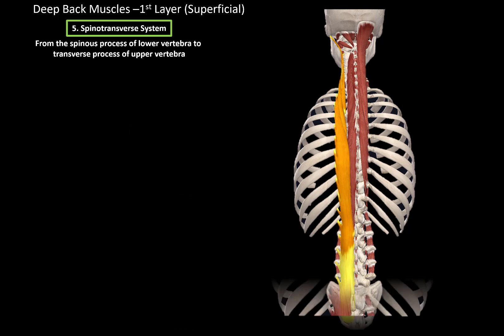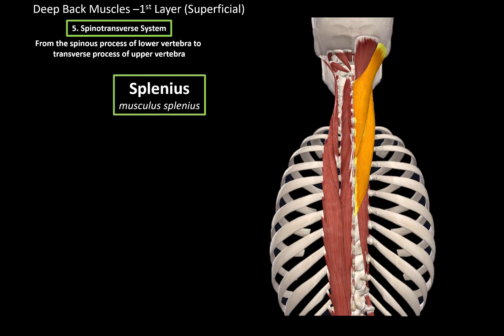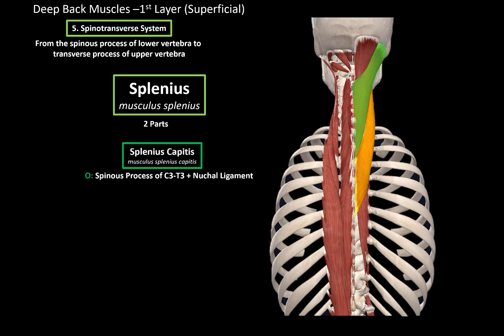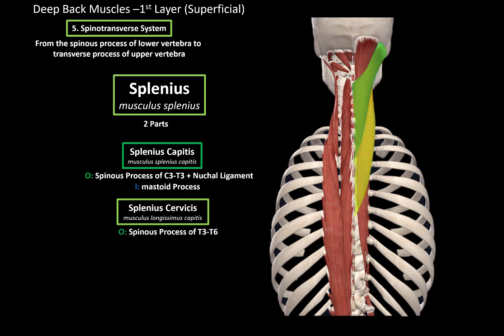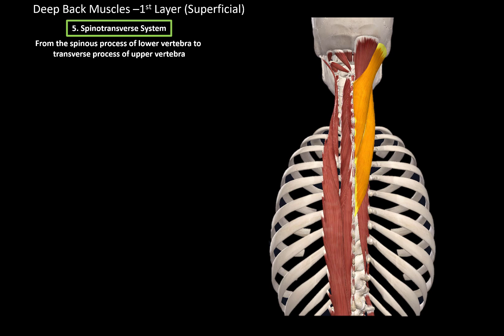Then there's the splenius muscle, divided into two sets. The splenius capitis originates at the spinous process of C3 to T3 and inserts at the mastoid process. The splenius cervicis originates at the spinous process of T3 to T6 and inserts at the transverse process of C1 to C2.